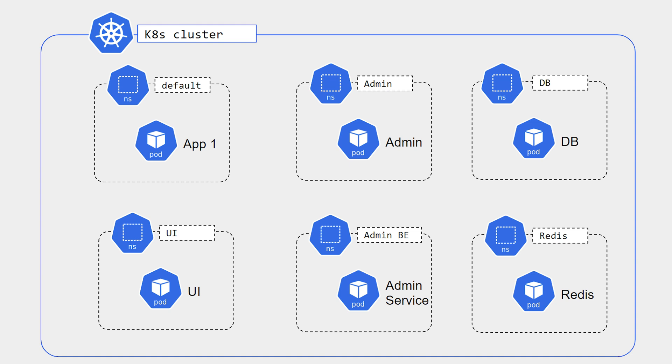Namespaces are a virtual cluster inside your Kubernetes cluster. They help us divide our entire application into smaller clusters inside a Kubernetes cluster. We can divide similar kinds of applications — database services in one, UI in another, backend in another — so it helps us to maintain everything in a different manner and identify what is deployed at which place.